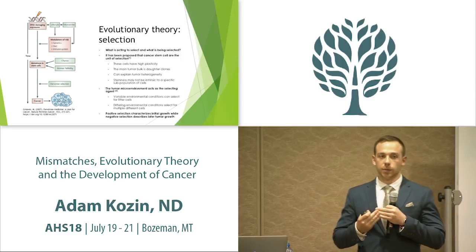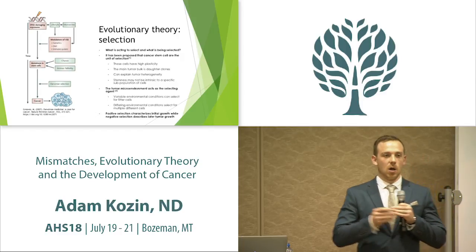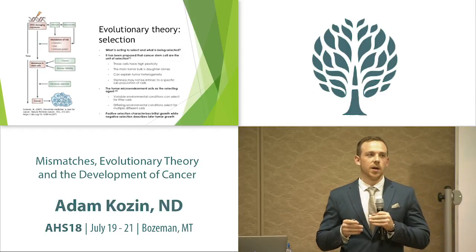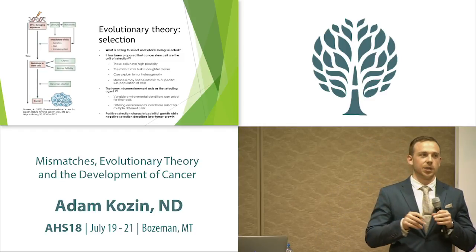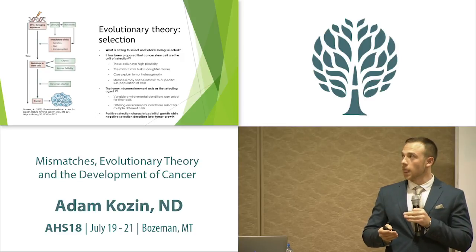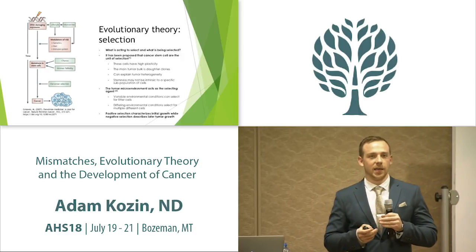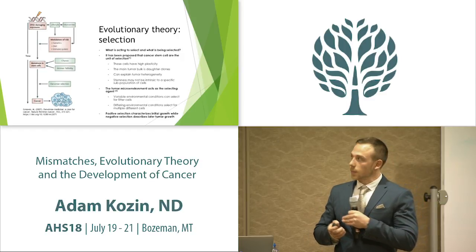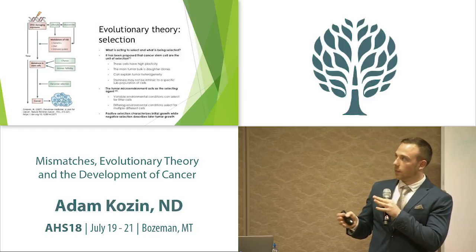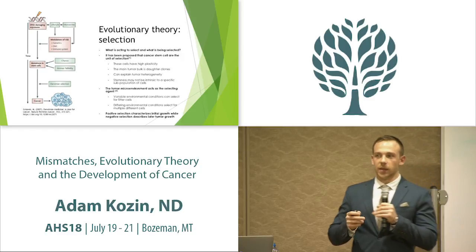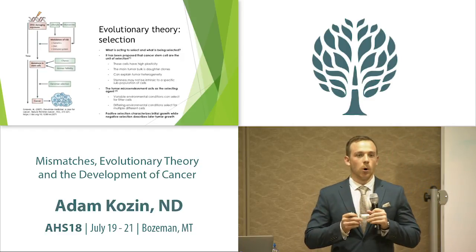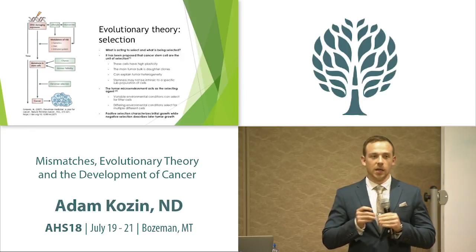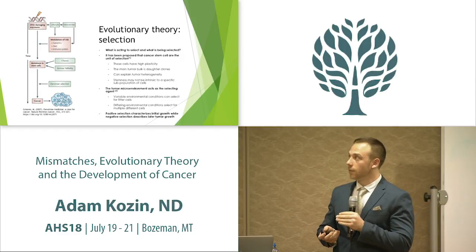Cancer stem cells also have a long lifespan, meaning they survive long enough to gain deleterious mutations which can potentially become cancer. They're also highly plastic, meaning they can take on multiple different phenotypes that can survive in different environments. The tumor microenvironment acts as the selecting agent — the environment surrounding cancer cells that puts selection pressures on them. Depending on the phenotype, these cancer cells can either survive and thrive or die off.